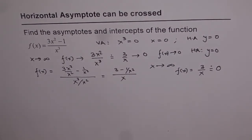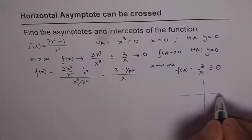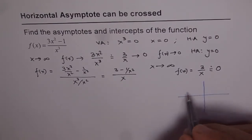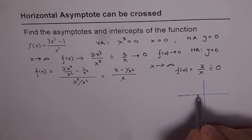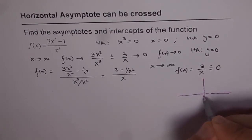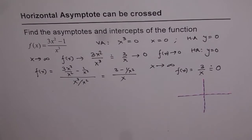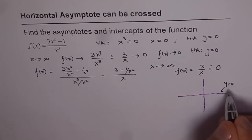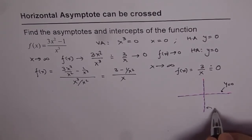So we have this function. If I sketch just the vertical asymptote and the horizontal asymptote, I get the horizontal asymptote as a horizontal line and the vertical asymptote as a vertical line. So y = 0 is my horizontal asymptote and x = 0 is my vertical asymptote.